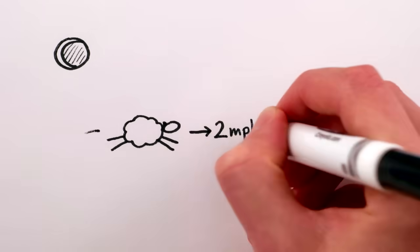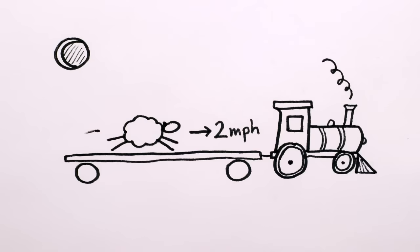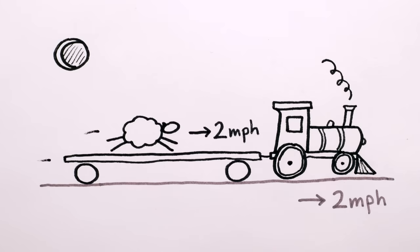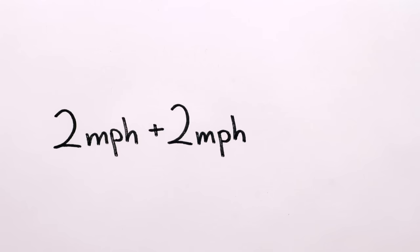Speaking of the moon, you probably also learned that if a sheep is moving 2 miles per hour relative to a train, and that train is moving 2 miles per hour in the same direction relative to the ground, then the sheep is moving 4 miles per hour relative to the ground. 2 miles per hour plus 2 miles per hour equals 4 miles per hour, right? False.